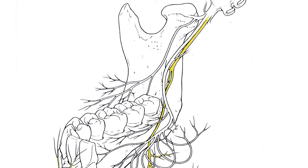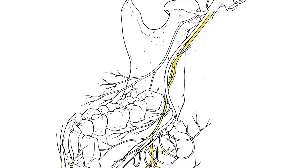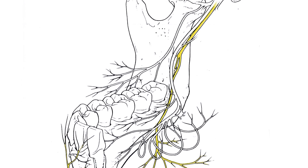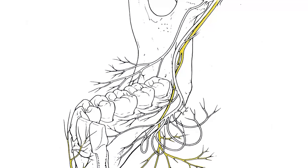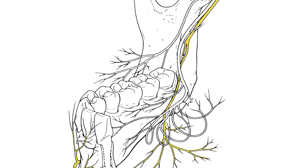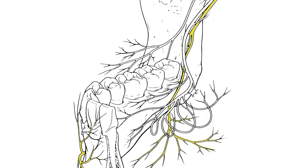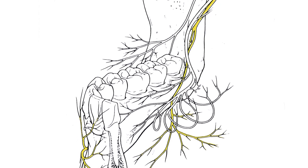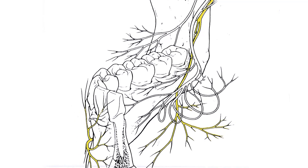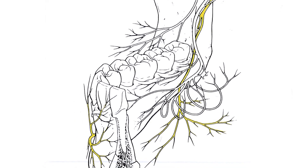The inferior alveolar nerve supplies the pulp of all mandibular teeth. It also supplies the buccal gingiva and periosteum, connective tissues and mucous membranes anterior to the first molar.